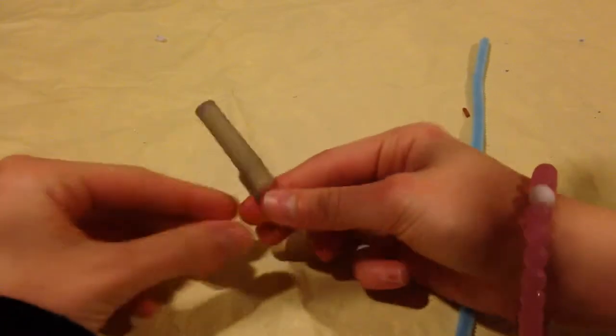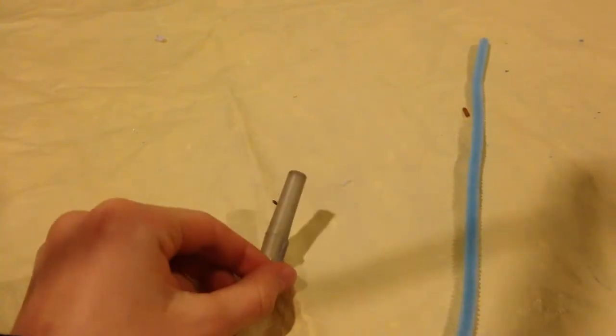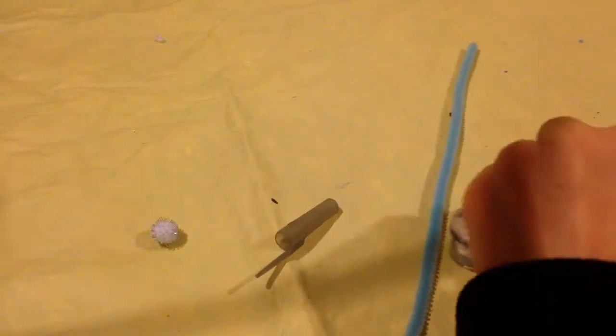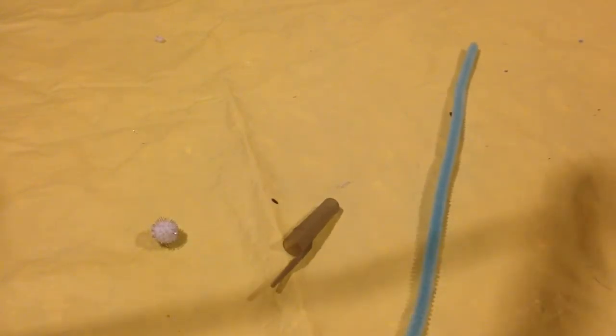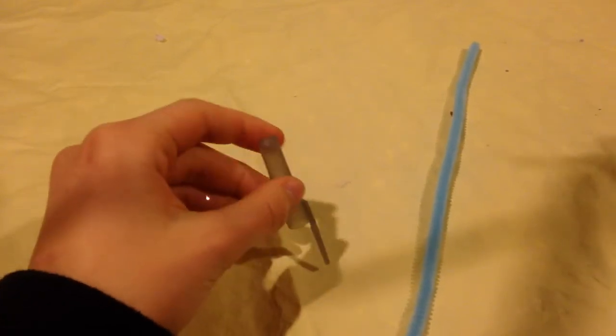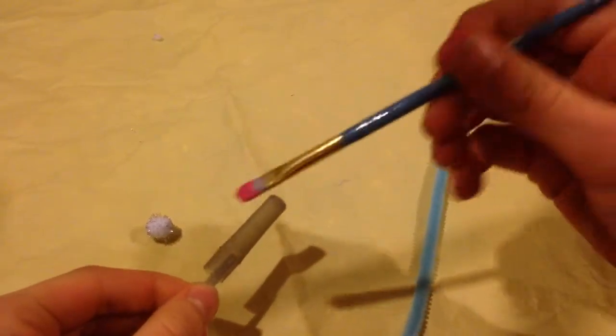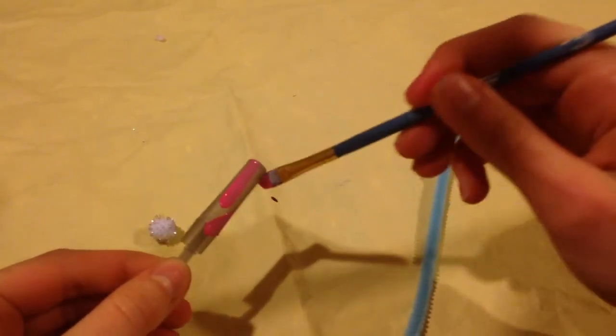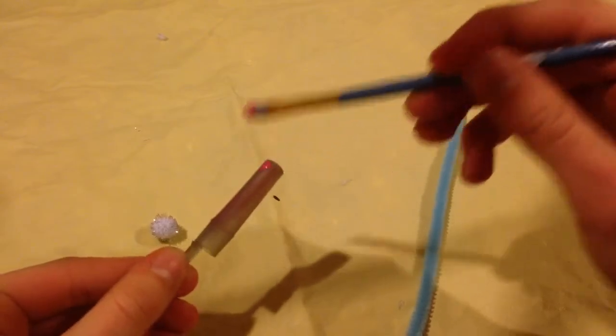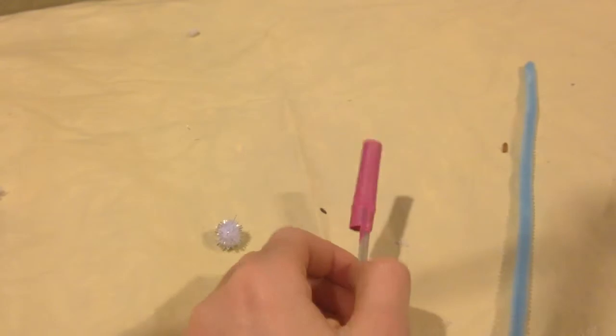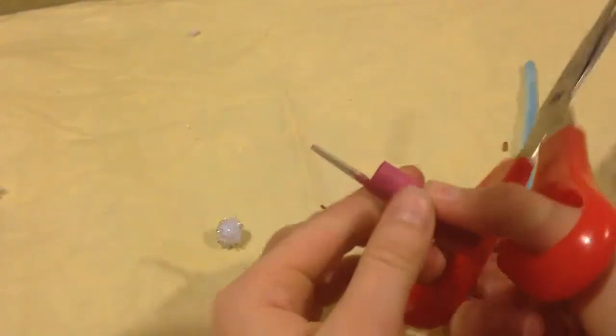You're going to start by taking a pen cap and painting it any color of your choice. We are going to be painting ours a dark hot pink, and we're going to hold it by the part where it could clip onto something. You don't need to paint this because later we'll just cut it off. So now we painted ours this hot pink, and you can just cut off the end.